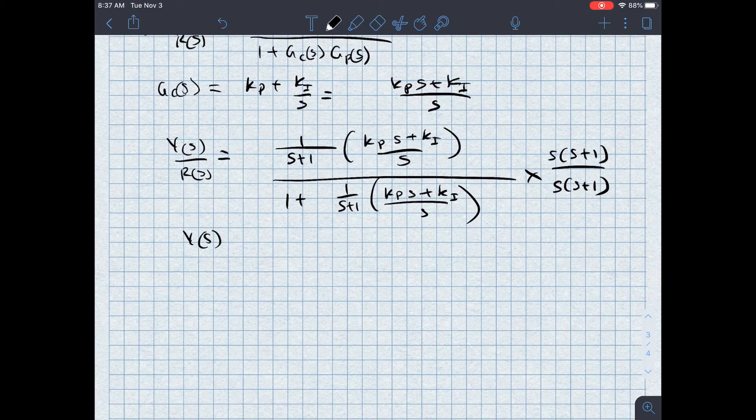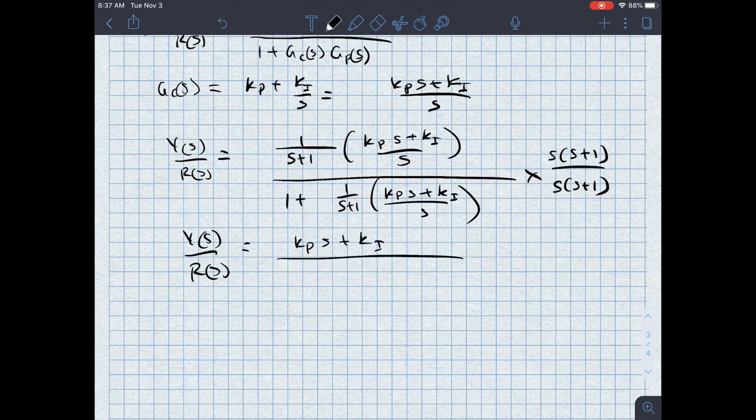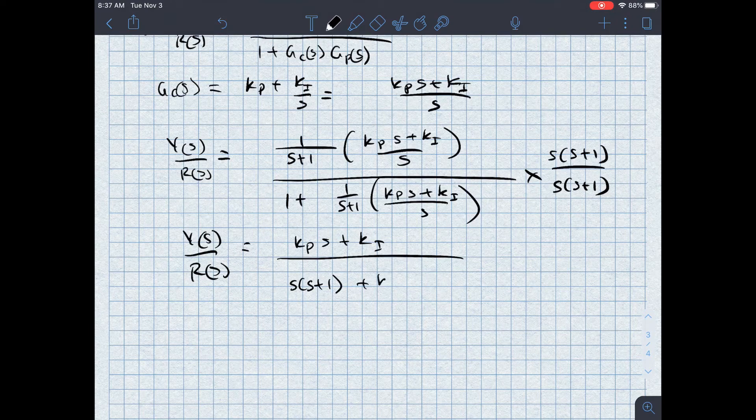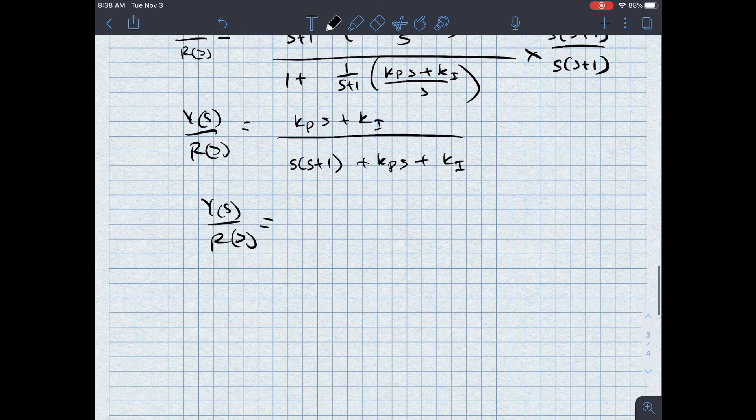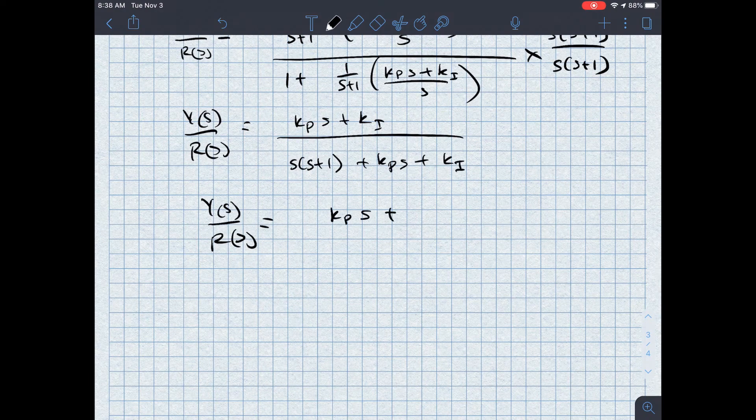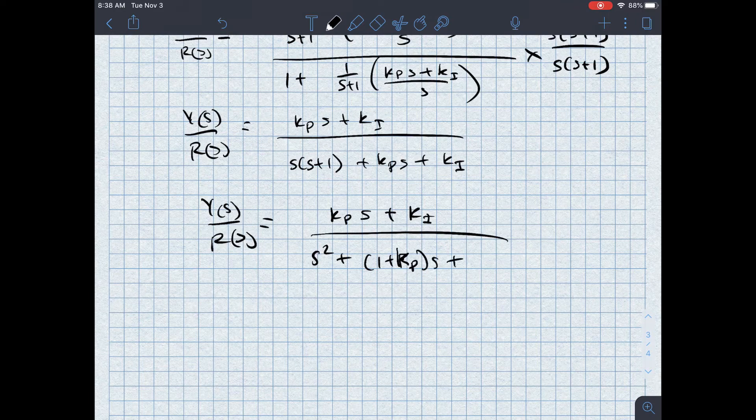So Y of S over R of S is equal to KPS plus KI over, and then I've got S, S plus one plus KPS plus KI. And so my T of S or Y of S over R of S in total is equal to KPS plus KI divided by S squared plus one plus KP times S plus KI.